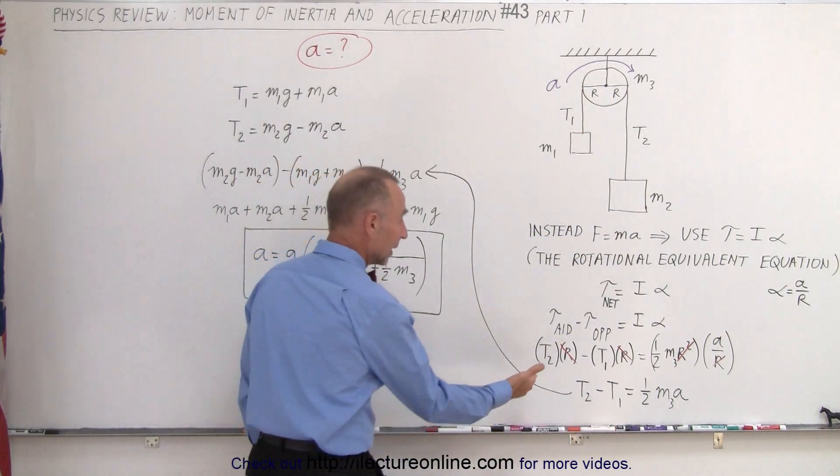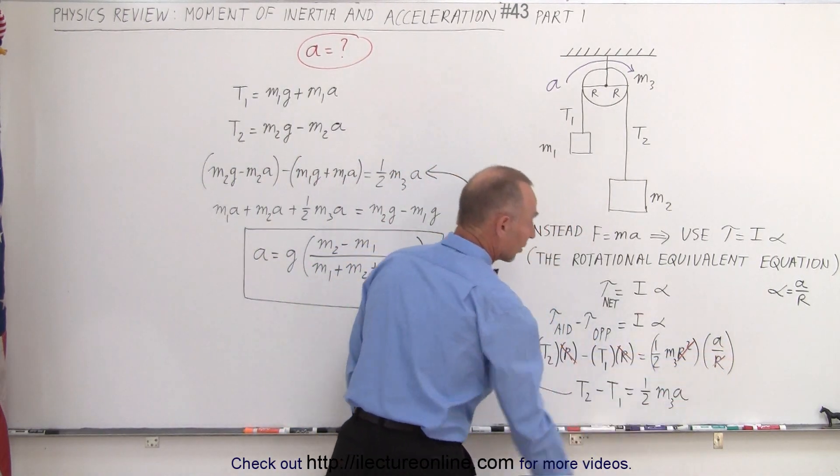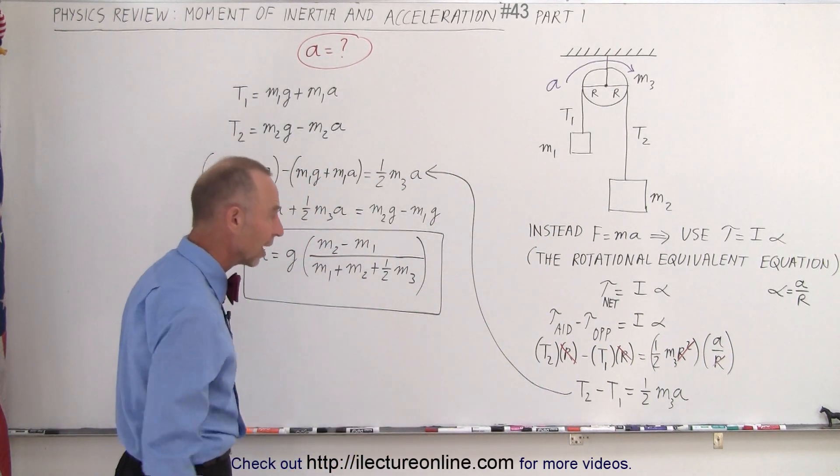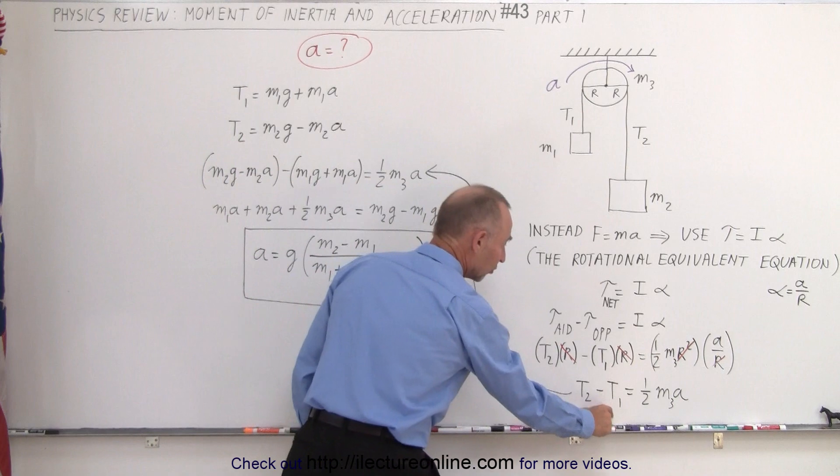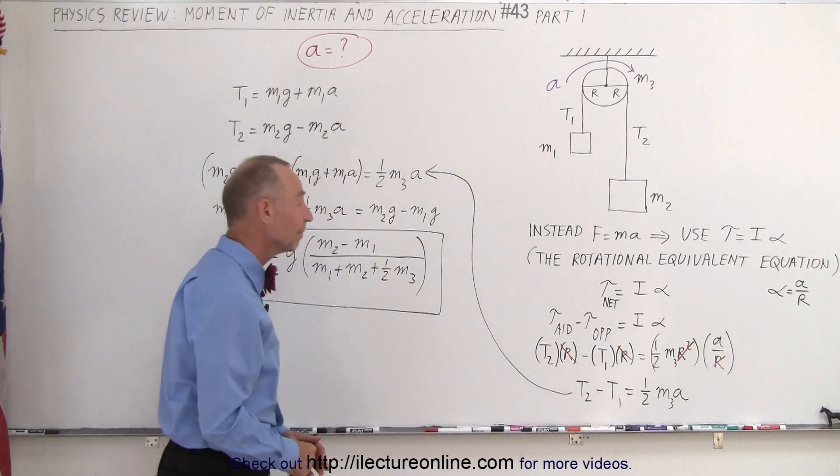So when you plug that in, force times distance minus force times distance equals moment of inertia times the angular acceleration with the proper substitutions. All the R's will cancel out. You have the difference between the tensions equals one half the mass of the pulley times acceleration of the system.